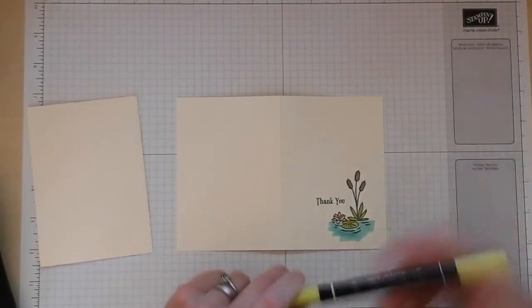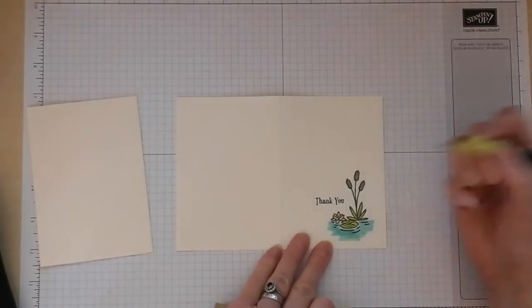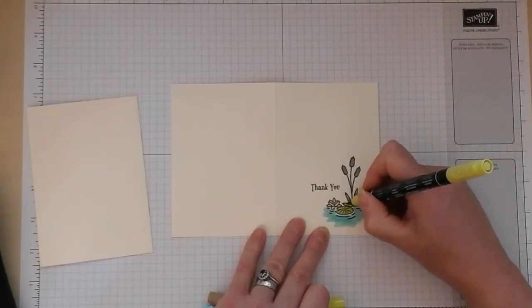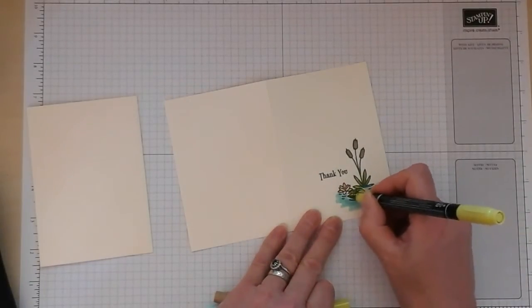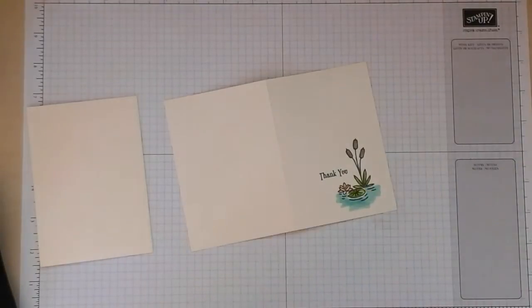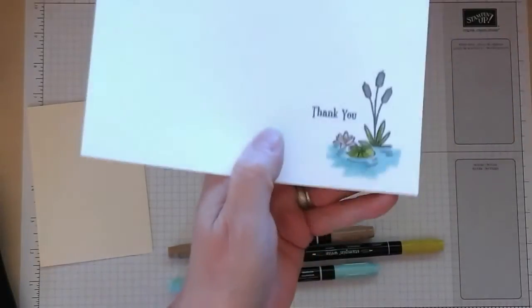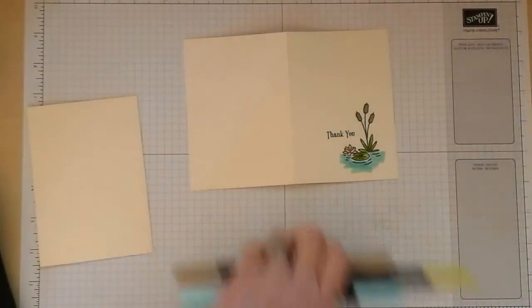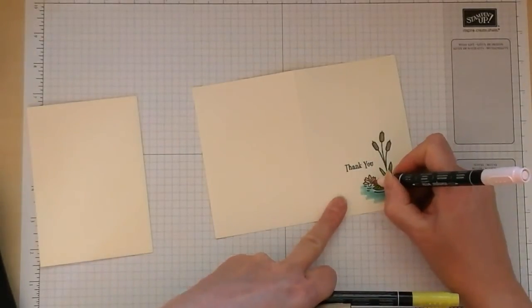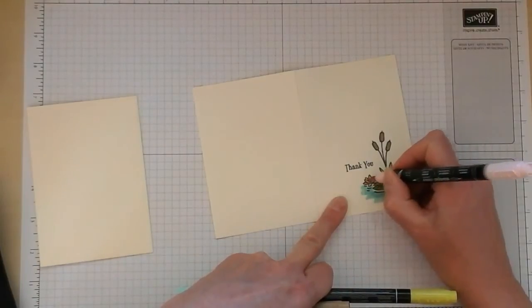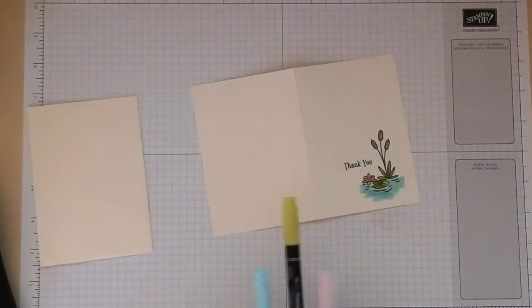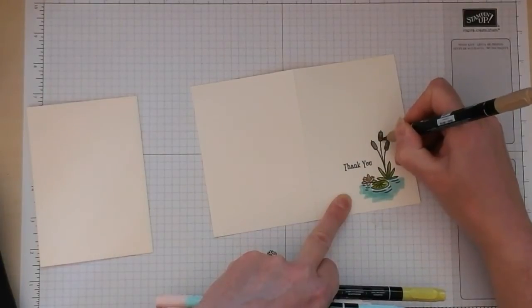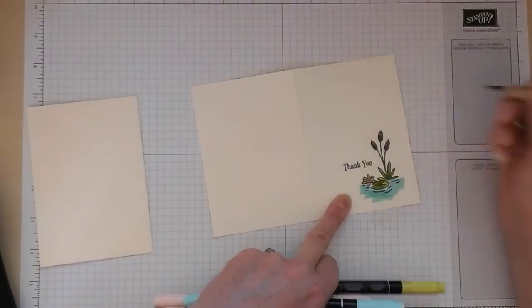What I'm going to do now is now that those Stampin' Write markers have had a little chance to dry I'm going to go back in now, bearing in mind I'm using exactly the same markers, and I'm going to go over some of my previous colouring. And hopefully you can see there on the green where I've had one layer of colouring and then the second layer of colouring over the top and it's a really simple way to add some shading or some dimension to your images. Even though these are not alcohol based markers you can add the extra shading and the extra dimension just by going over it a second time.